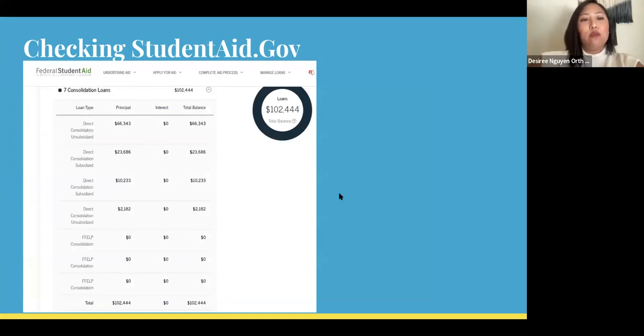Once you are in the account, you'll be able to view your loans and what type of loans you have as well as a status. For example, there are seven loans in this account and it shows you what type of loans they are direct or FFELP and it shows you that they are consolidated loans. This will be relevant in the presentation later.